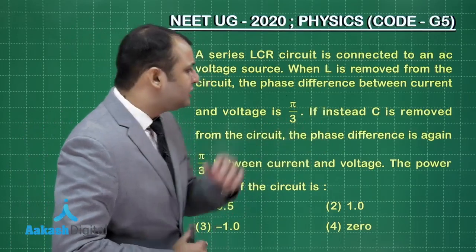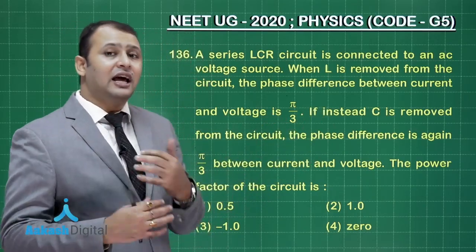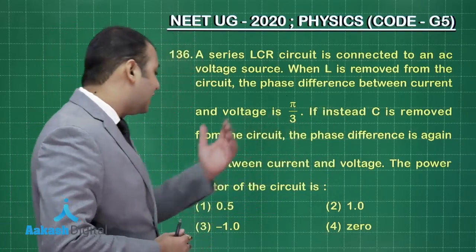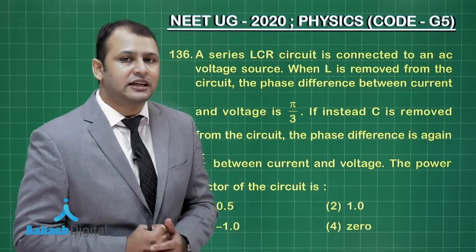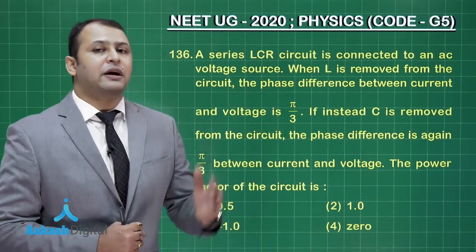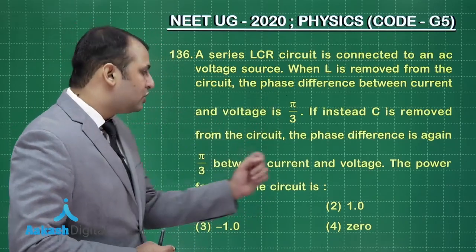If instead C is removed, then it becomes an LR circuit and in that case, the phase difference is again pi by 3. That means in that case, voltage is leading the current by pi by 3. The power factor of the circuit is...